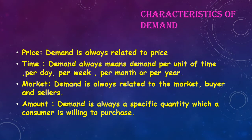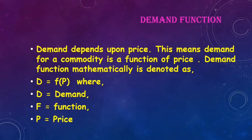Characteristics of demand: there are four characteristics of demand — price, time, market, and amount. Because of these four characteristics, demand varies. Price: demand is always related to price. Time: demand always means demand per unit of time, whether per day, per week, per month, or per year. Market: demand is always related to a market where buyers and sellers meet. Amount: demand is always a specific quantity which a consumer is willing to purchase.